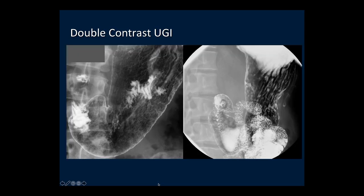This slide shows two normal stomachs on double contrast upper GI. On the left, we see the normal mucosal pattern of the body and antrum of the stomach, characterized by a lacy-like network called the area gastricae. On the right, we see the normal rugal folds that run along the long axis of the stomach. The normal thickness of the rugal folds varies with the degree of distention.